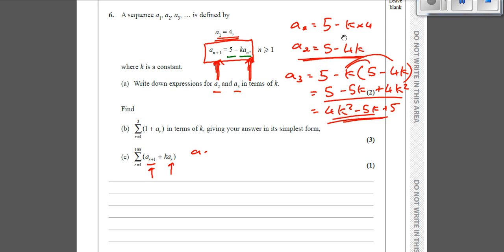So a2 plus k lots of a1, if we let r equal 1. So a2 was 5 minus 4k plus k lots of a1. Now a1 was 4, k times 4. So that's going to be 5 minus 4k plus 4k, which if we simplify that, it simply goes to 5.